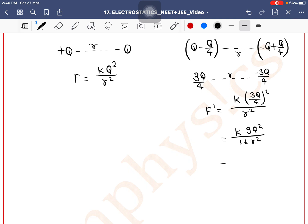This equals k × 9Q² by 16r², which is 9/16 × kQ²/r². If I put this equation here, then F' = 9/16 × F.